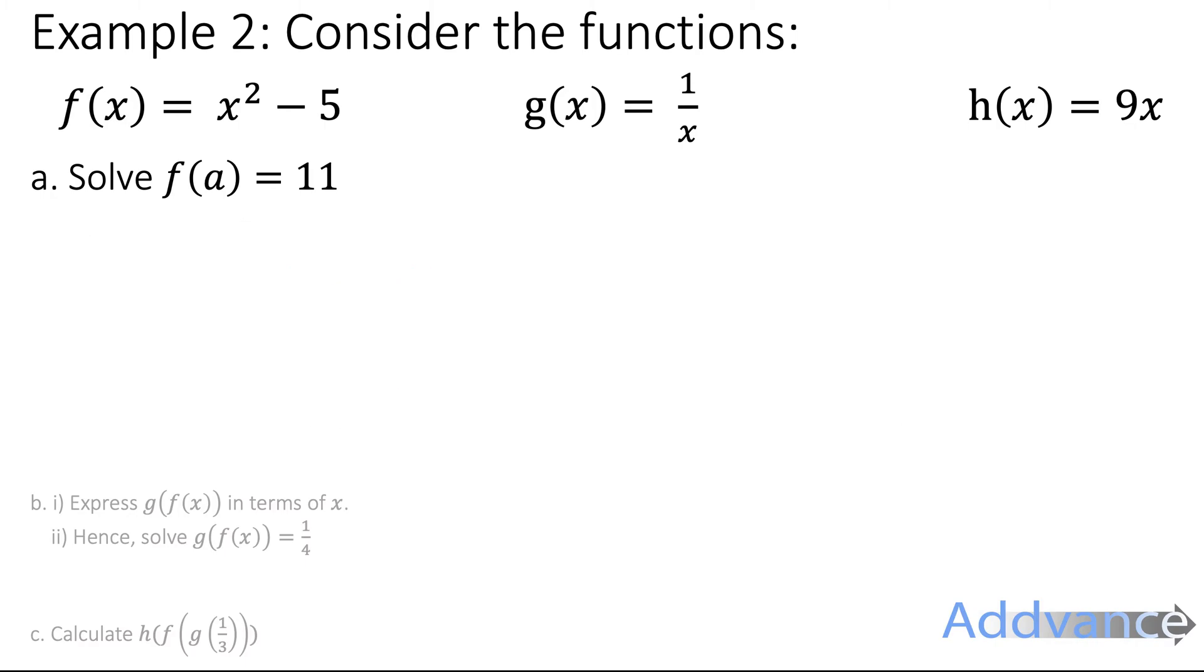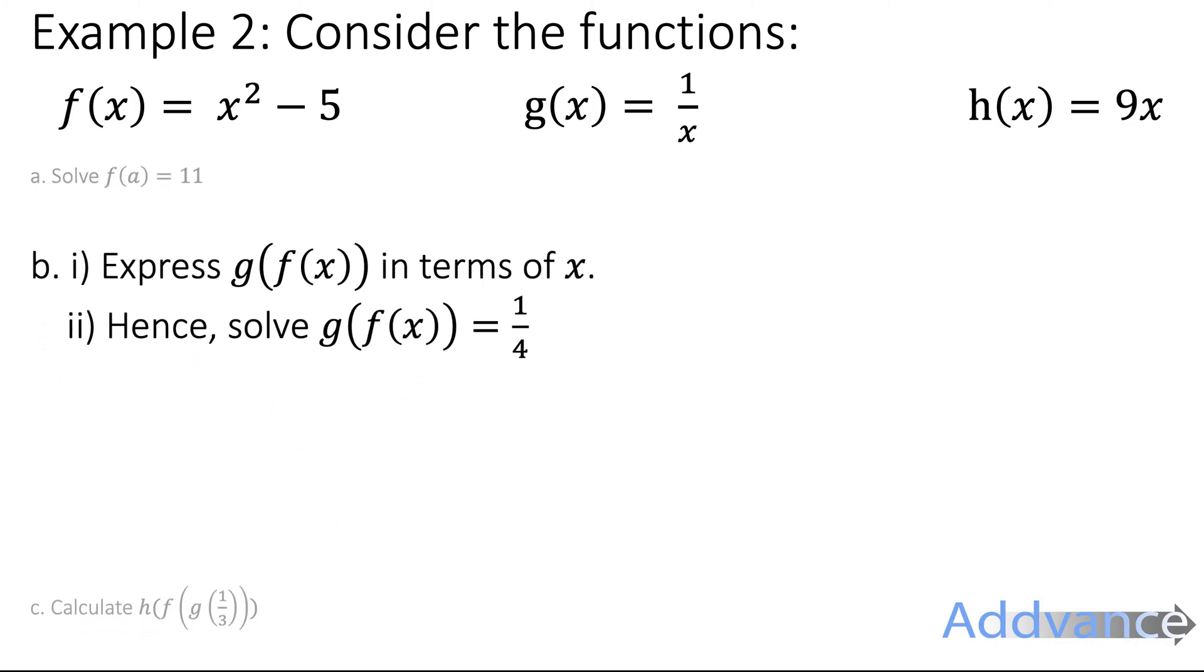Now let's have a look at part b. I'm going to express g of f of x in terms of x, and then solve g of f of x equals a quarter. So as I say, f is going into g here. So we've got f of x equals x squared minus 5, and g of x is 1 over x. We're going to put f of x into g, because g is on the outside, f is on the inside.